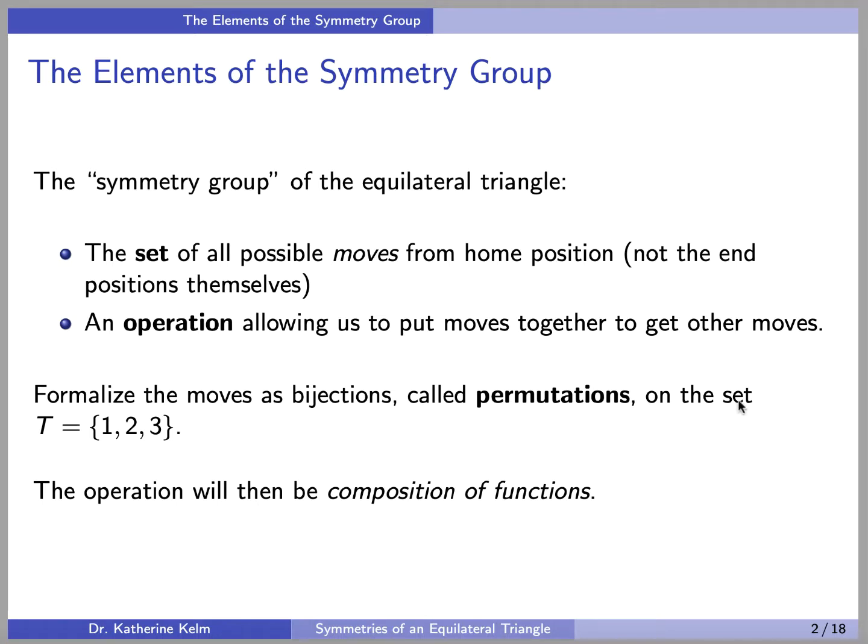So in order to avoid the problems of the geometry of the moves, we are going to formalize the moves as bijections called permutations. A permutation is a bijection from a set T to itself. In this case, the set T is going to be the set consisting of 1, 2, and 3. And the operation will then be composition of functions.